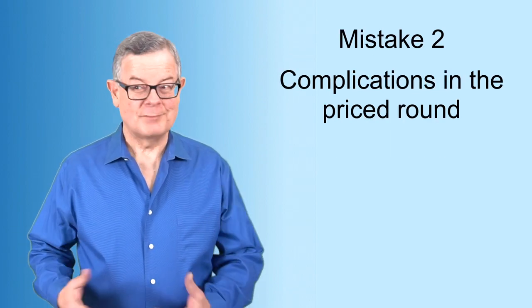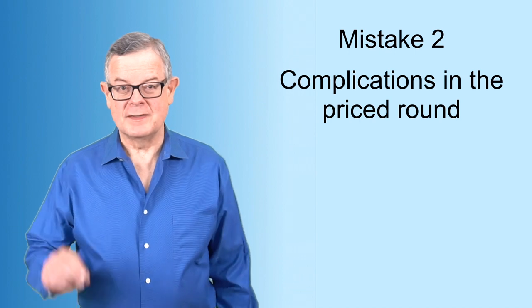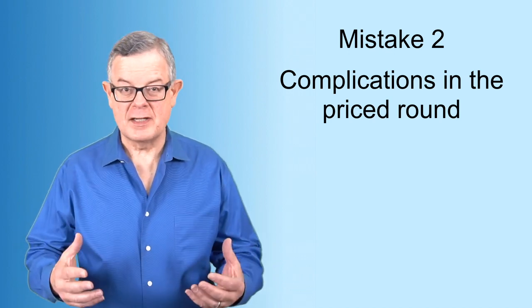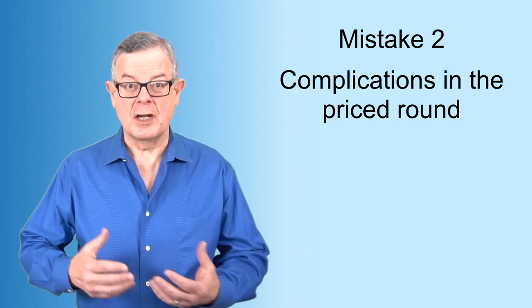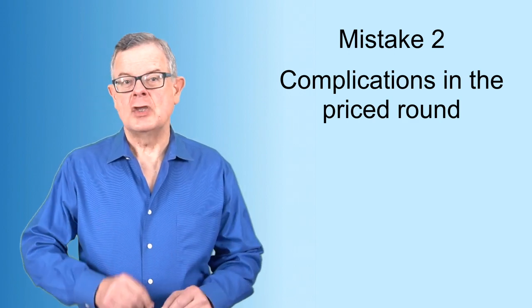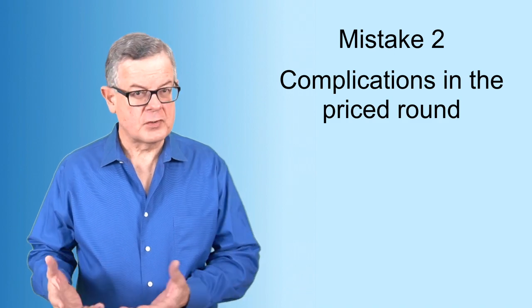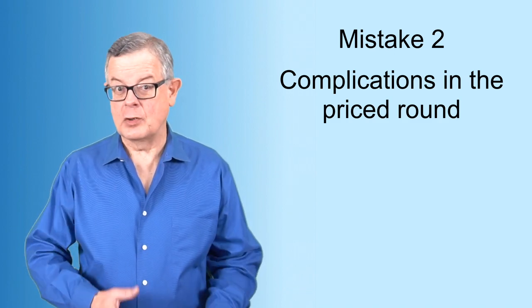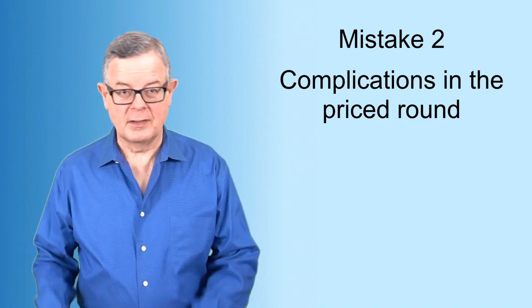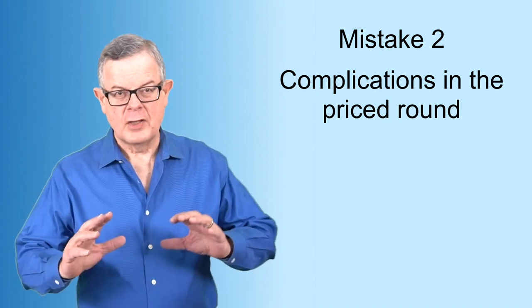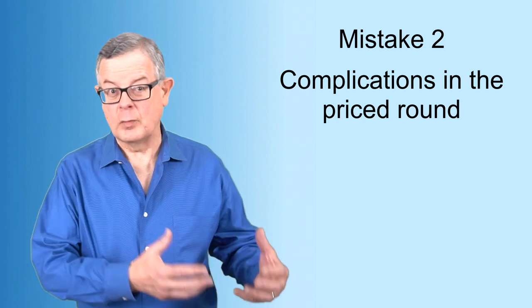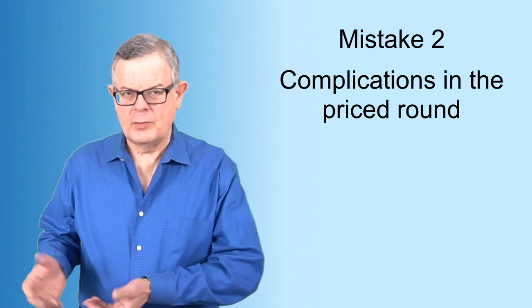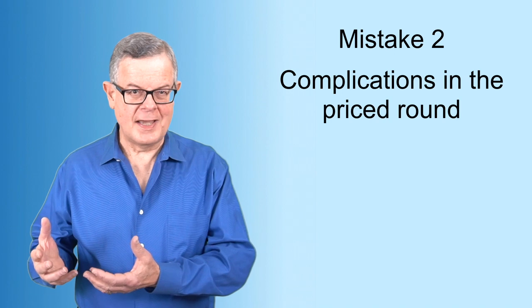Mistake number two is kind of related to mistake number one. But instead of having so much funding from convertible securities that you get surprised by the dilution you're going to get, it's surprising your future investor. The investors in that Series A that are going to convert the safes and the convertible notes. If you have too much money in convertible securities, say multiple millions of dollars, and then you go try to raise, say, a couple of million dollars from a Series A,